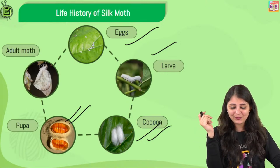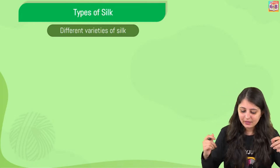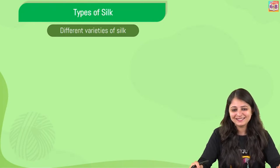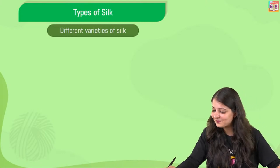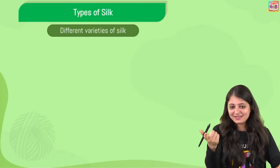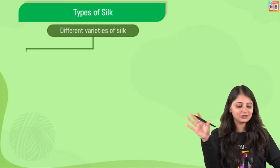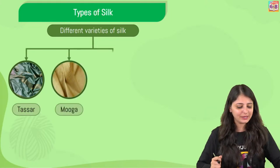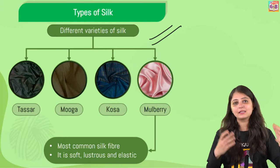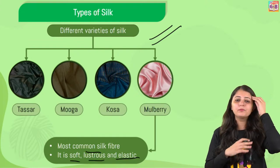We also discussed types of silk. Do you remember any type? Let's see - which is the highest quality silk? You remember: mulberry, Tassar, Muga, Kosa! These are the different varieties of silk that we have. Mulberry is by the way the highest quality silk - it's the most common also. It's soft, lustrous, elastic, and can be dyed in beautiful colors.